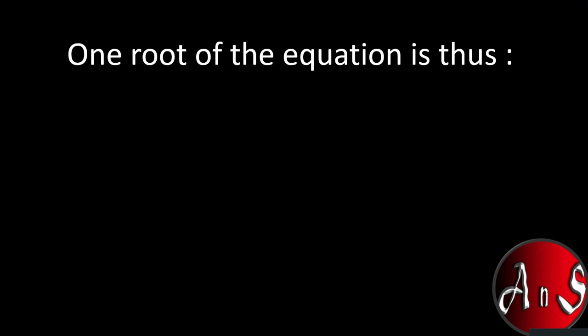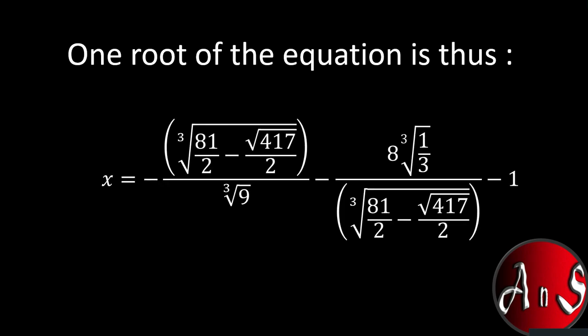So in the final step, one root of the equation if we can find in the relation is basically x equals minus the entire cube root thing upon cube root 9 minus 8 times cube root of 1 by 3, divided by the messy thing minus 1. So this is one root of the cubic equation which you have solved maybe in under 2 to 3 minutes, and in an examination hall it might not require more than this.